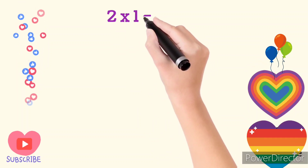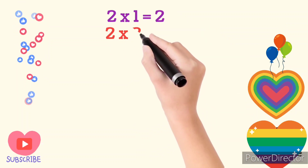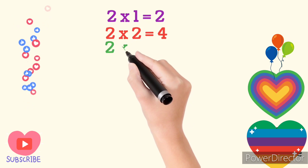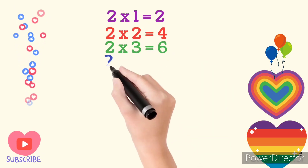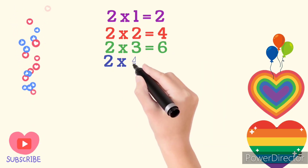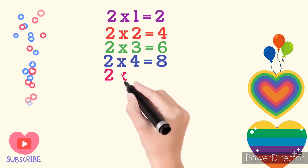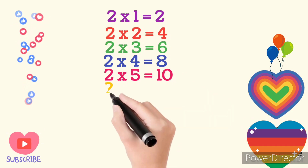Table of 2. 2 times 1 is 2. 2 times 2 are 4. 2 times 3 are 6. 2 times 4 are 8. 2 times 5 are 10.